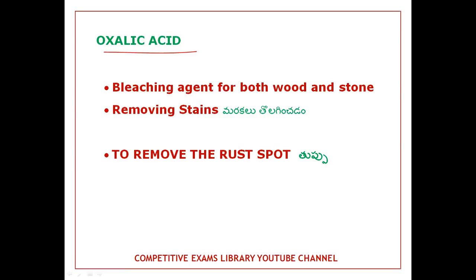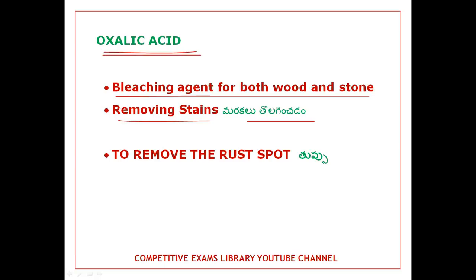Next is oxalic acid. Oxalic acid is used as a bleaching agent for both wood and stone. It is also used for removing stains and rust spots.